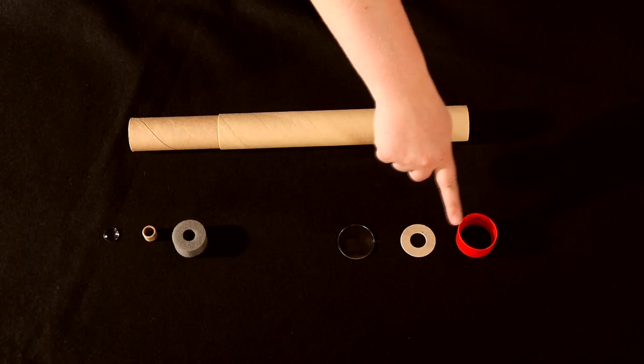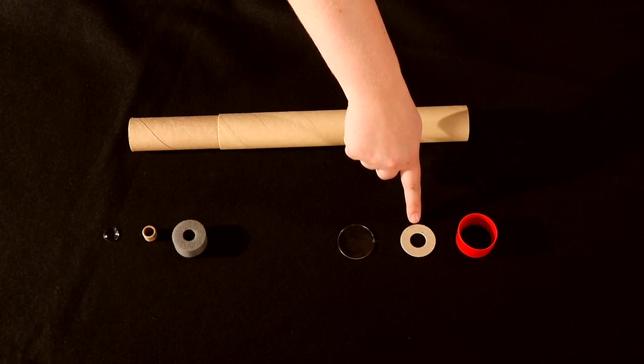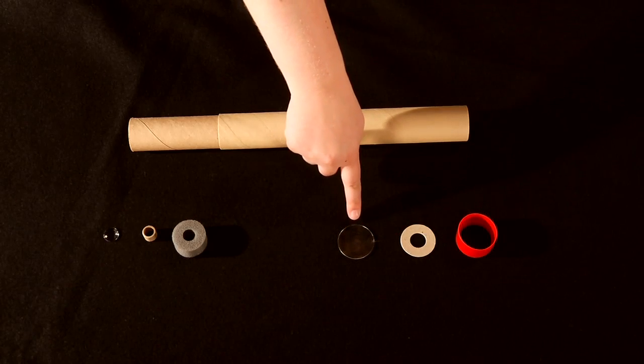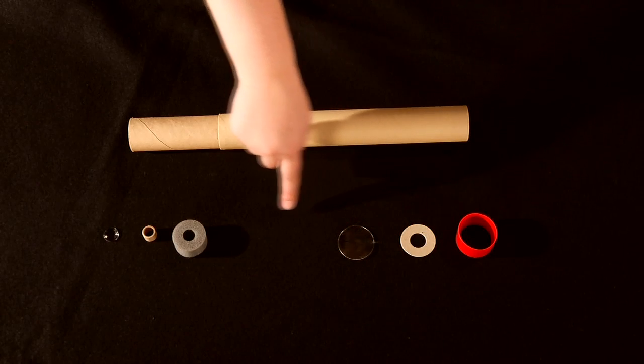Here we have a plastic cap, an optional cardboard washer of about the same diameter, and a convex lens, also of the same diameter. For the other end of the telescope,